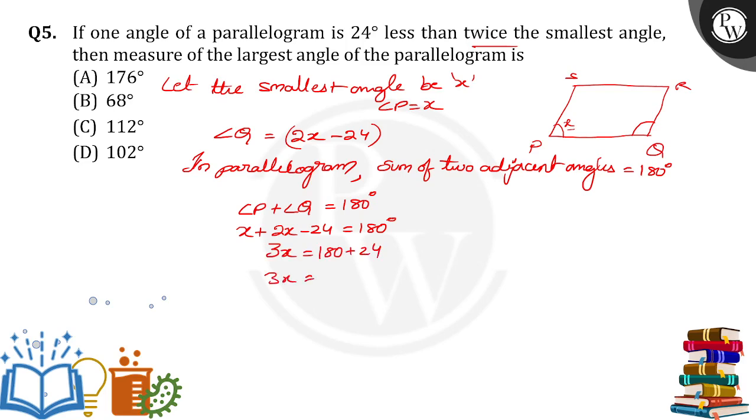3X equals 180 plus 24, we will get 204. Then X is equal to 204 divided by 3, so we will get X is equal to 68 degrees.